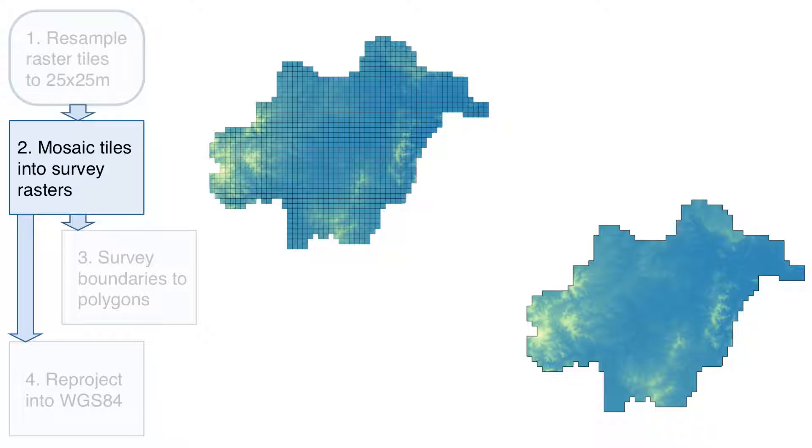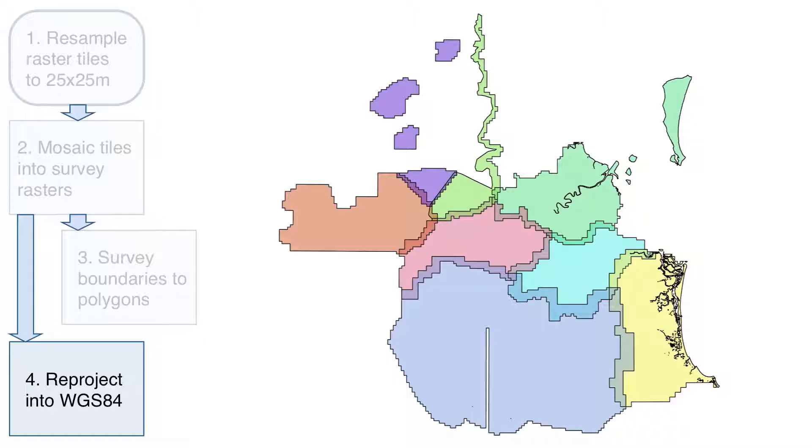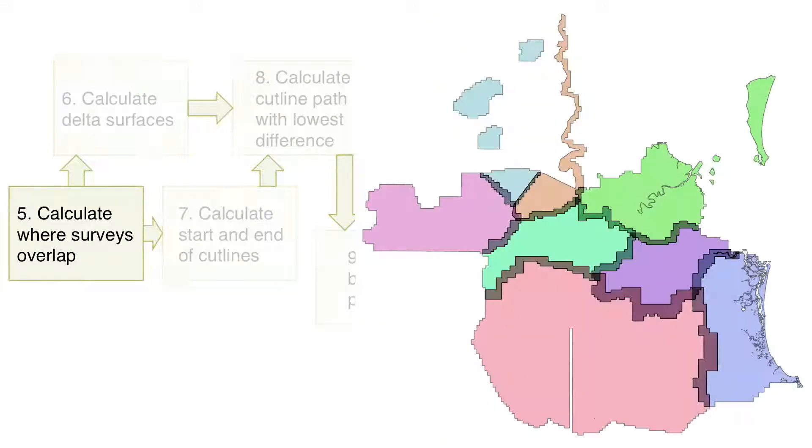Originally, some parts of the process were manual and involved user discretion. We've automated these parts using a series of consistent rules, and by doing so we can ensure that the process is repeatable. The same input data will always produce the same output.